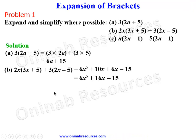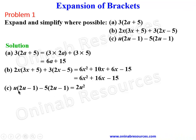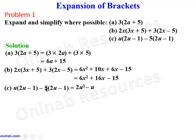For part c we again have two brackets. We use u to multiply everything inside the first bracket, and minus 5 to multiply everything inside the second bracket. u times 2u gives 2u squared, u times negative 1 gives negative u. Then minus 5 times 2u gives minus 10u, and minus 5 times minus 1 gives plus 5 — remember, minus times minus gives plus.